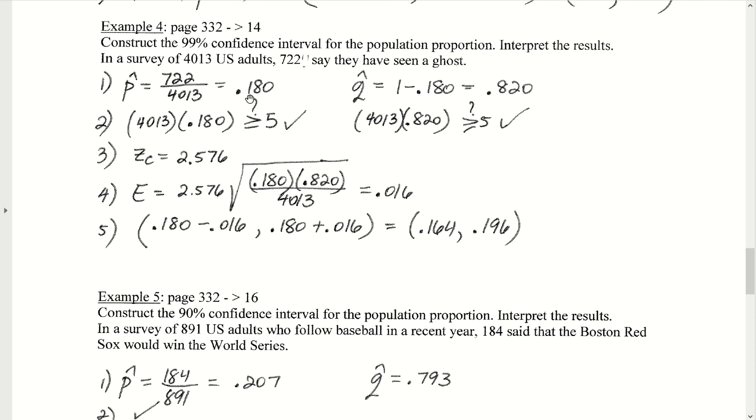Our confidence interval for our proportion is going to be p-hat minus E to p-hat plus E. P-hat was 0.180, so we get 0.180 minus 0.016 to 0.180 plus 0.016, which gives us an interval of 0.164 to 0.196. So we believe with 99% confidence that the true proportion of all U.S. adults that believe they've seen a ghost is somewhere between 0.164 and 0.196.